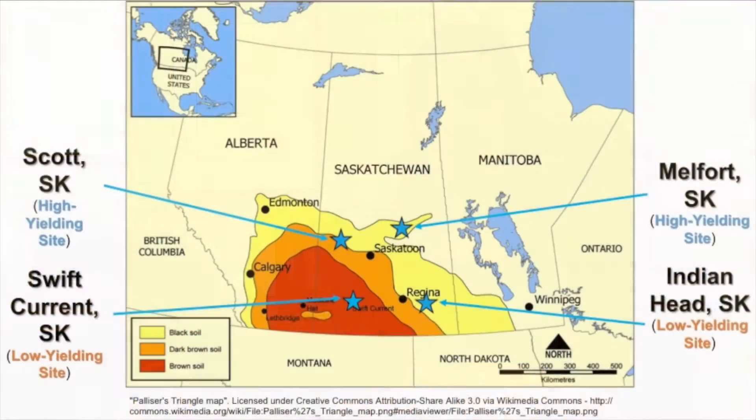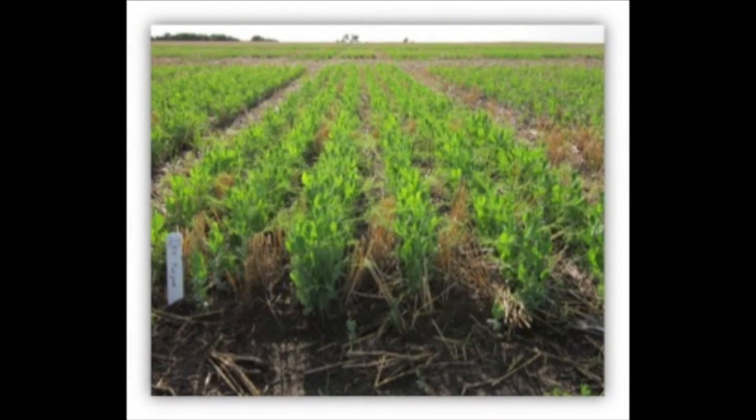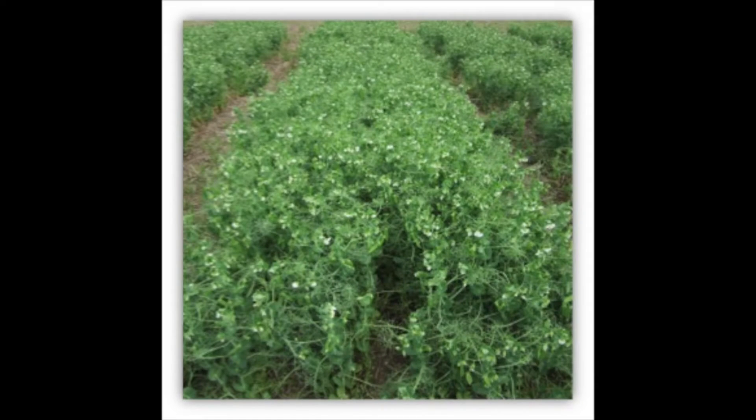Looking at most of the site years, our trends are divided between high yielding and low yielding sites. At our high yielding sites, we generally see a response to three inputs: using a higher seeding rate, foliar fungicides, and granular inoculant instead of a liquid inoculant. Those three inputs generally increase yields when applied alone and are additive when you apply more than one in combination. As we add additional inputs at those high yielding sites, we see greater yield potential and less yield variability — adding more inputs actually stabilizes yield at high yielding sites such as Scott or Melfort.